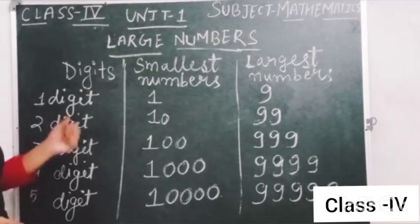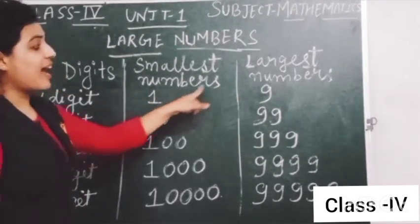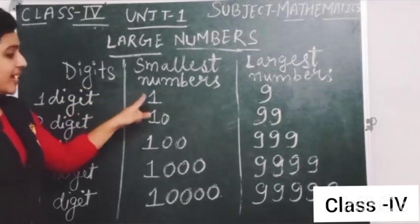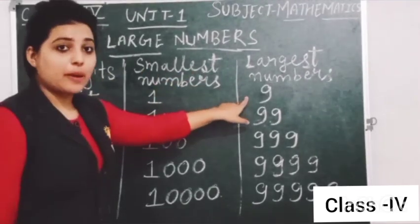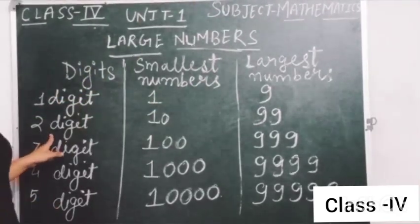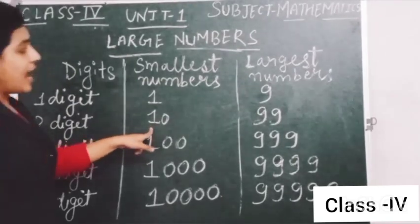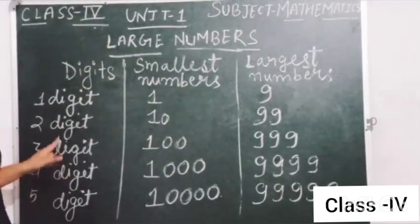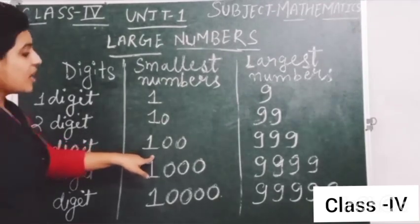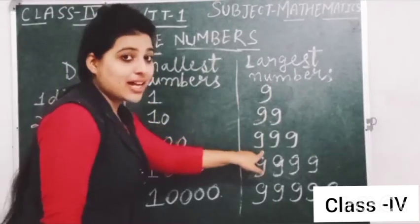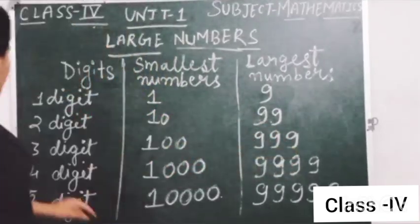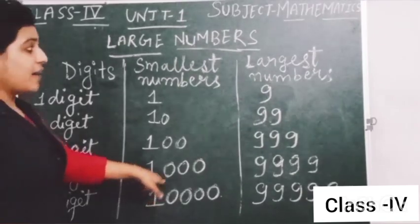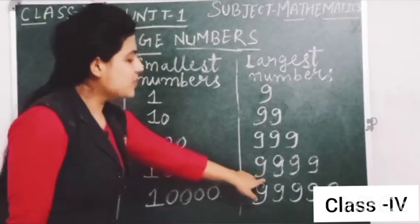So students, here we have an interesting pattern of smallest numbers and largest numbers. Look here: the 1-digit smallest number is 1 and the 1-digit largest number is 9. Similarly, the 2-digit smallest number is 10 and the 2-digit largest number is 99. The 3-digit smallest number is 100 and the 3-digit largest number is 999. The 4-digit smallest number is 1,000 and the 4-digit largest number is 9,999.